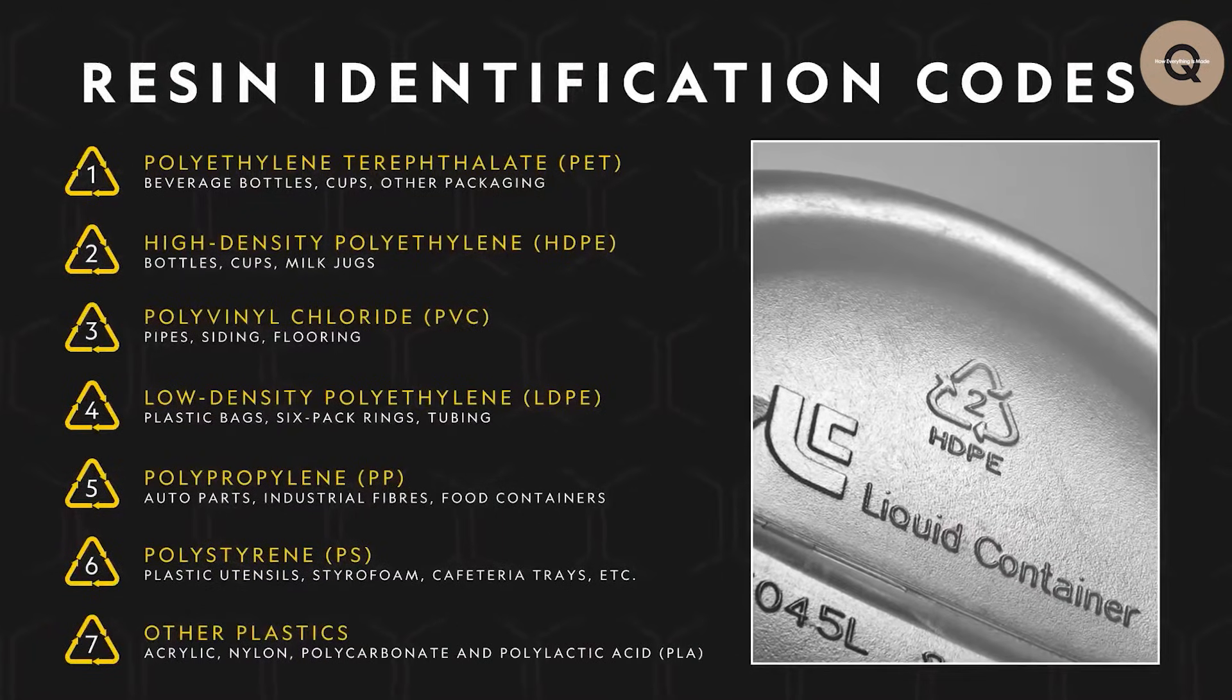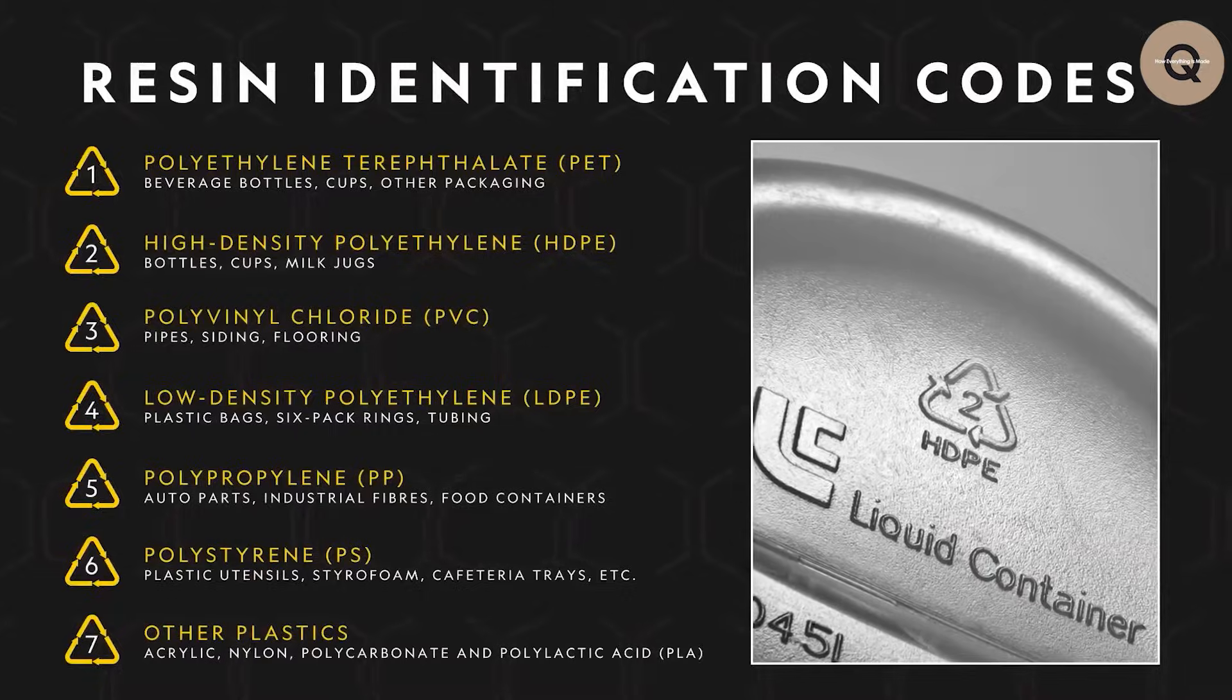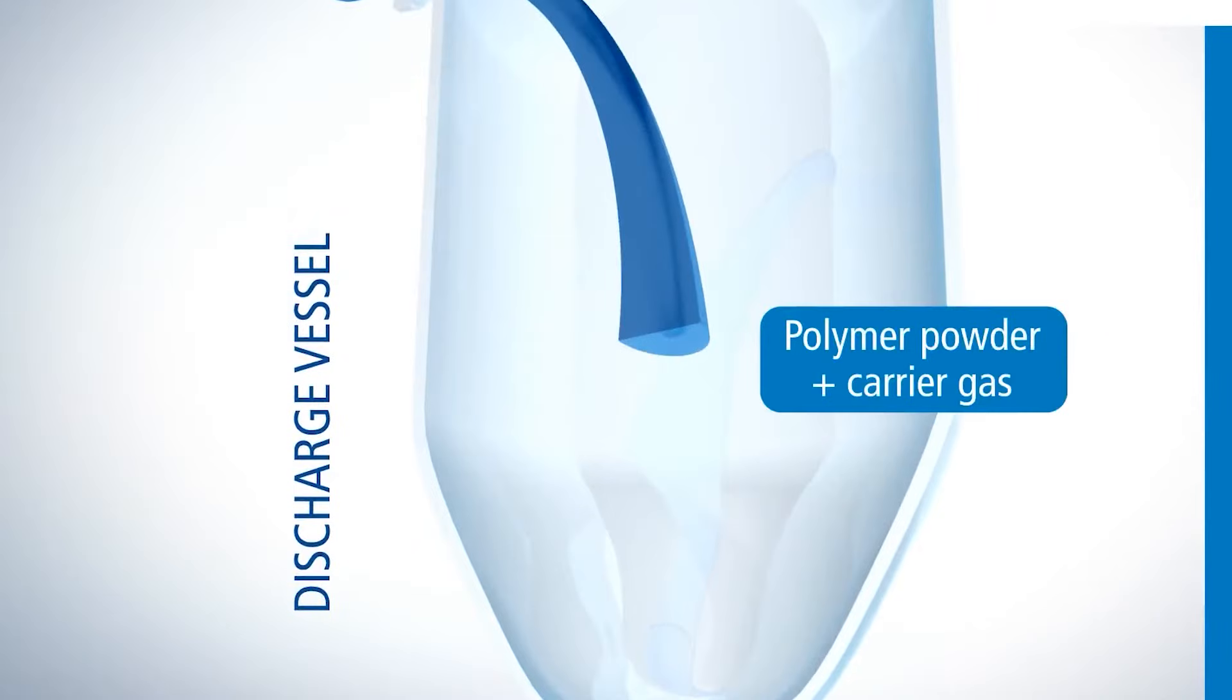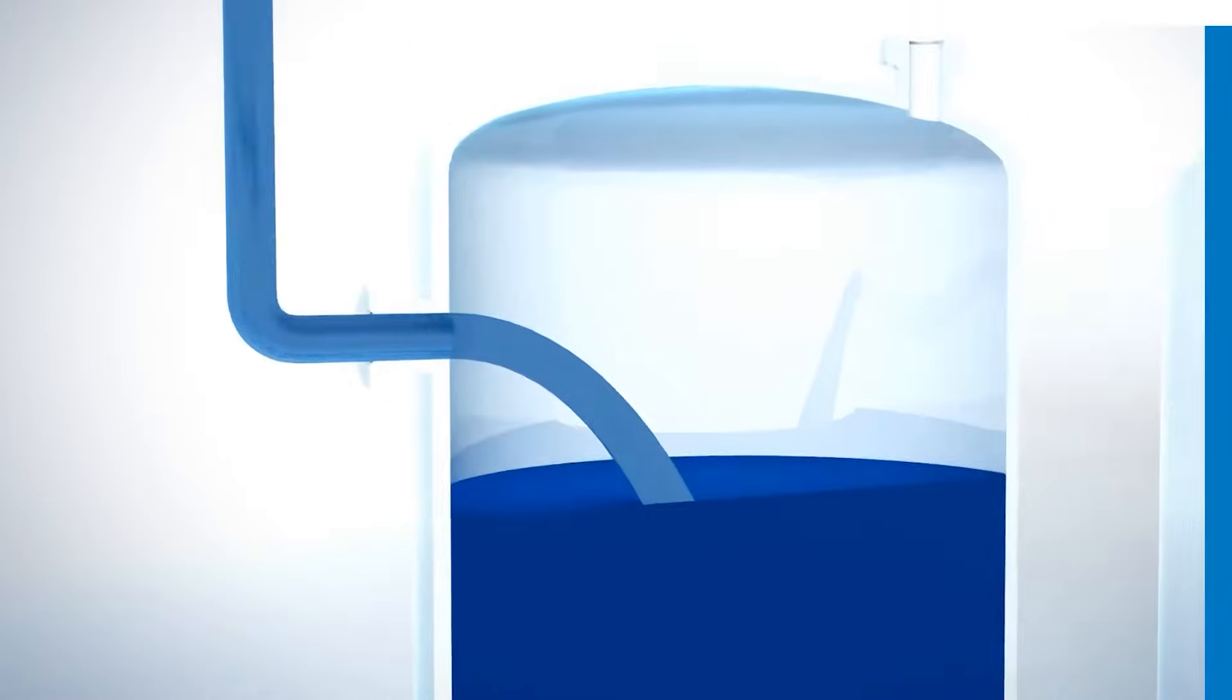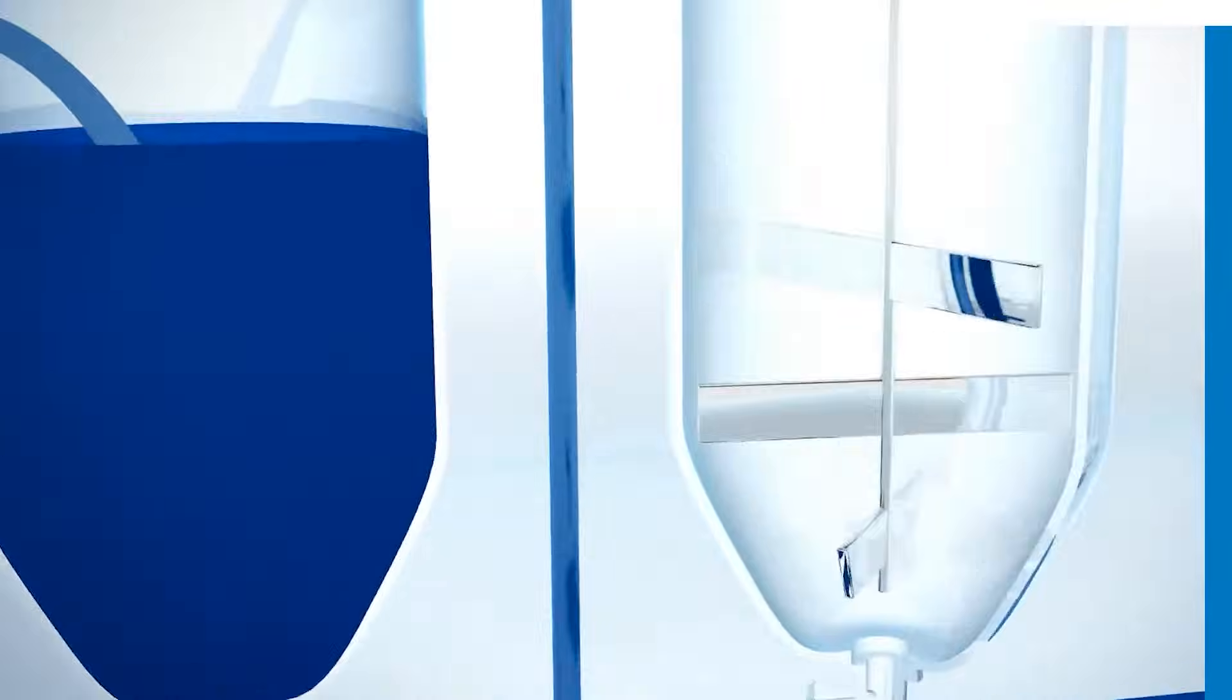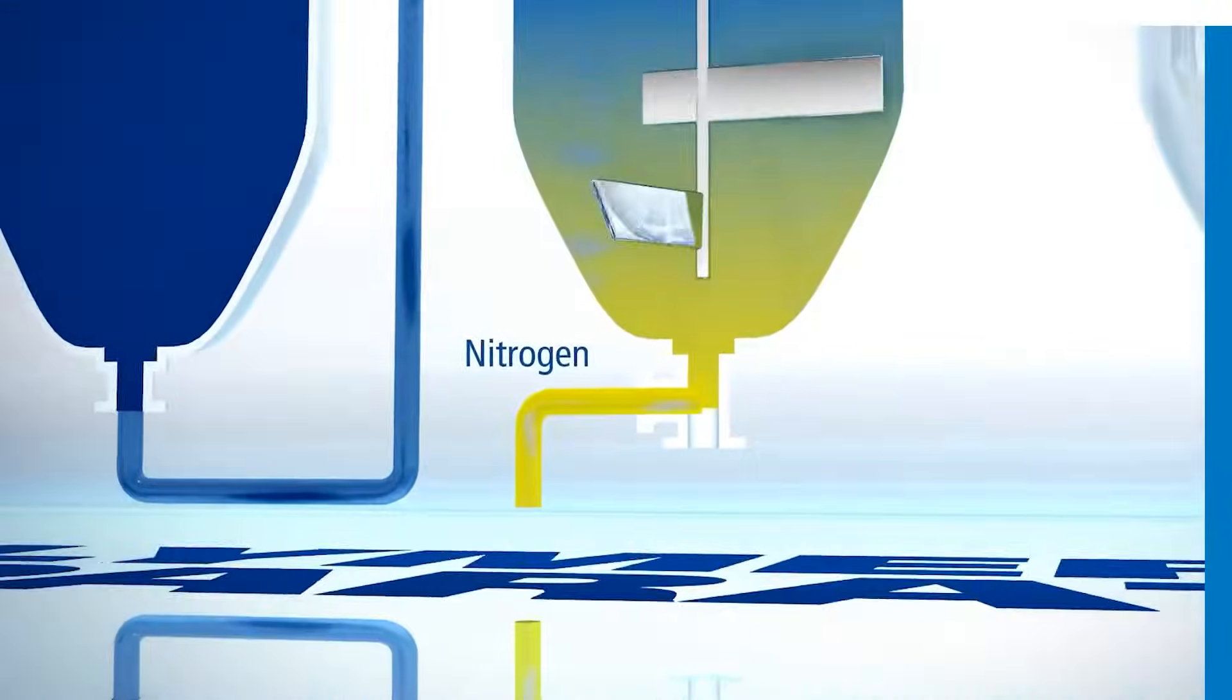Now hold your excitement because the journey doesn't end there. The condensation polymerization process is responsible for the formation of certain types of plastics. This process involves the reaction of two distinct monomers, which results in the release of byproducts such as water. One example of a plastic that's created in this manner is nylon, which is similar to polyester.